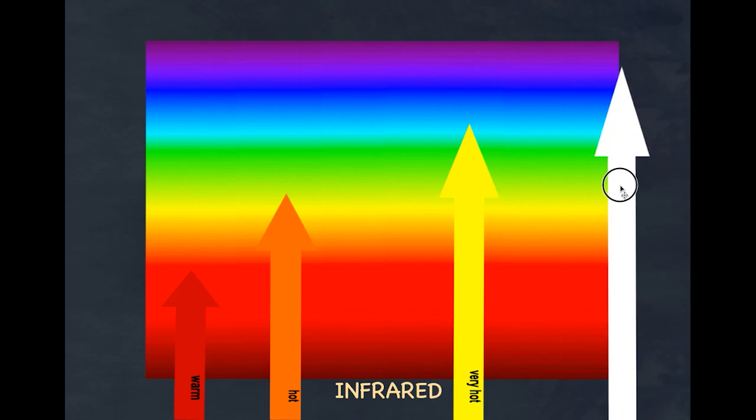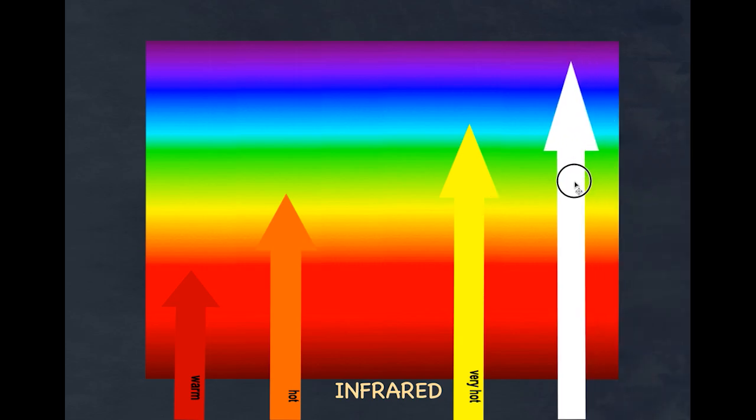If something is particularly hot, white hot, we are getting still the red and the oranges and the yellows but now we're getting the smaller wavelengths as well. Because we're seeing the whole spectrum as well as the infrared radiation we interpret that as white. Clearly there is a relationship between how much wavelengths are being emitted and the temperature.